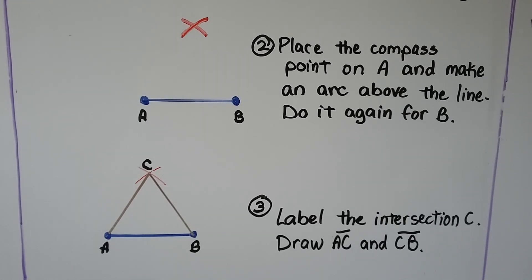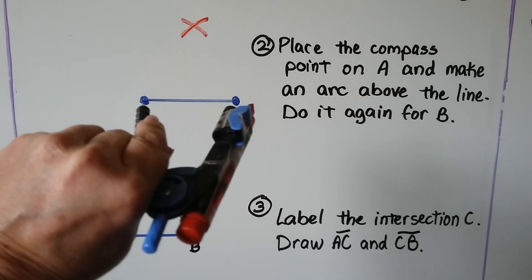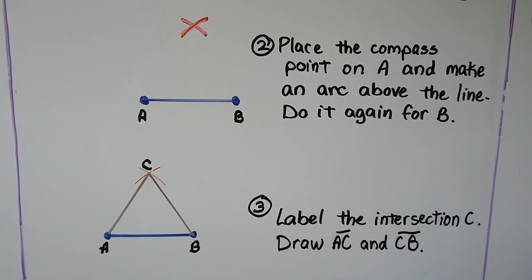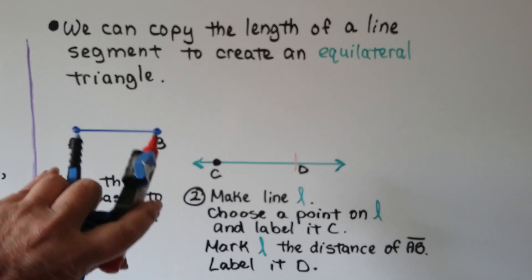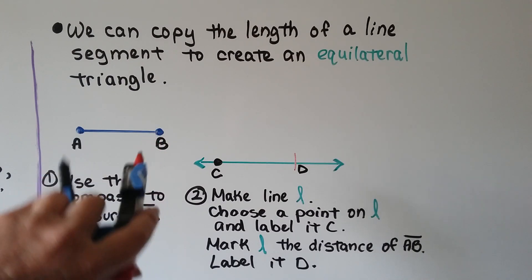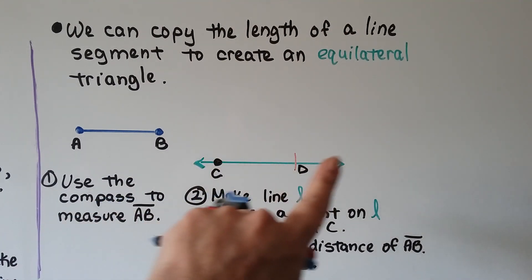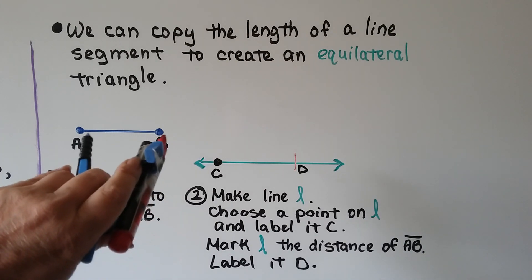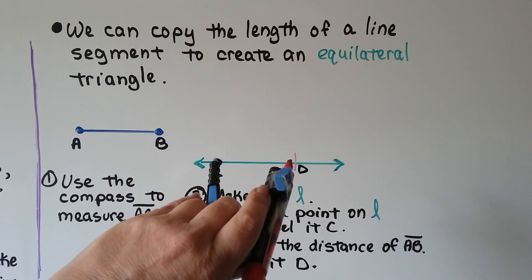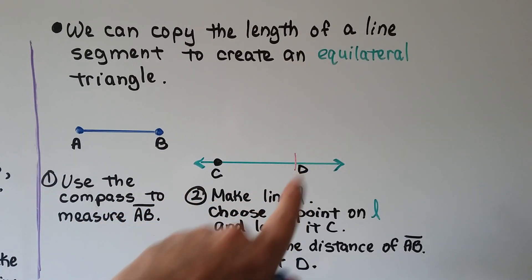Now we can do this if we're just copying this and drawing it on line L. So just as we did in the beginning of the video, we measure AB and we draw line L. We put a point on it, C. We put from this measure, we put our point on C and we make an arc and label it D.